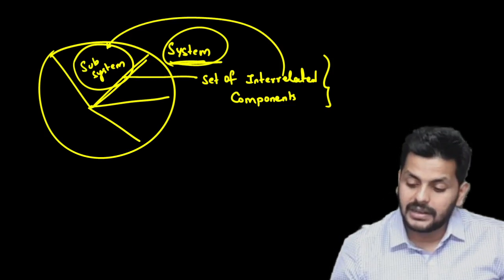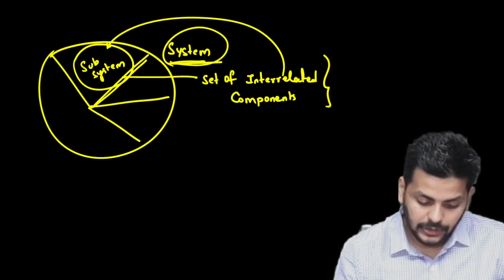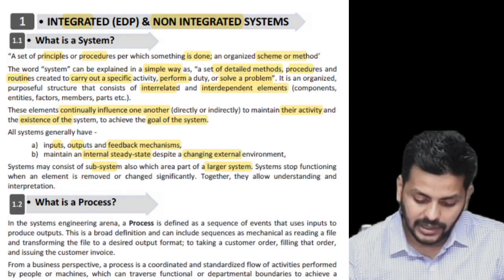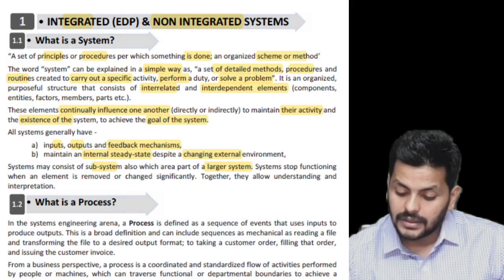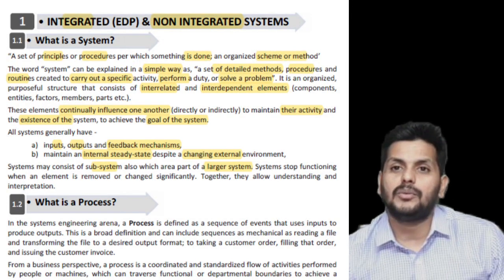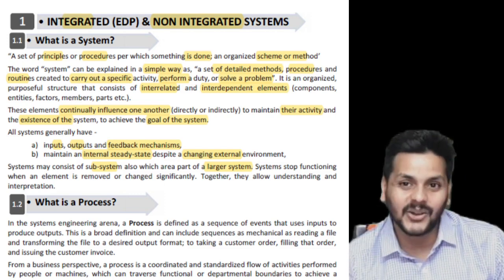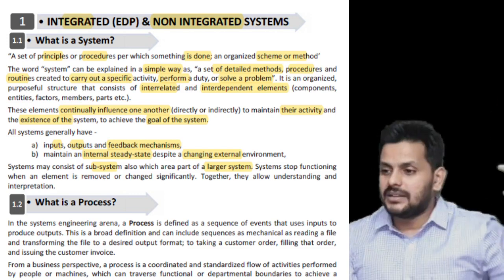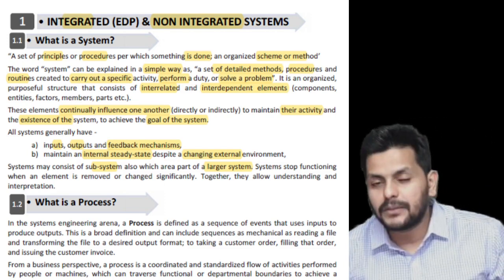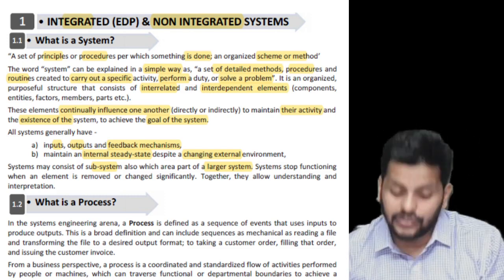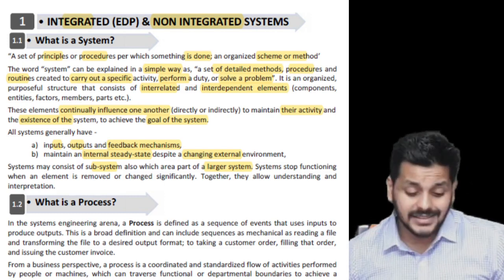A system stops functioning when an element is removed or changed significantly. If you pull one tire off a car, it may not work - and if you remove the engine entirely, the car cannot move. So if you remove some parts of the entire system, the entire system may come to a standstill. Together, the components allow understanding and interpretation. That is the story behind what a system is.